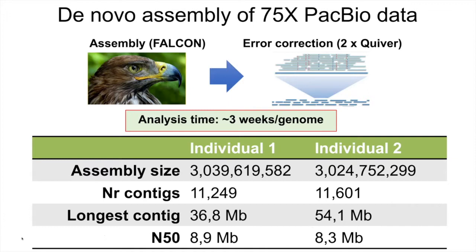We performed de novo assembly of these reference genomes using PacBio data — 75x of data from the old RS2 days. We assembled this using the Falcon tool and also did error corrections of these reads. At that time it took three weeks just to analyze one of these genomes on our big supercomputer, but nowadays it's much faster. The assembly statistics were very good: we were able to assemble 3 gigabases for both individuals and assembled these into about 11,000 contigs each. These are among the most successful assemblies so far using PacBio data.